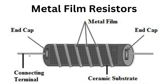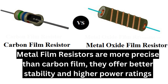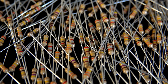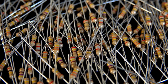Metal film resistors are more precise than carbon film. They offer better stability and higher power ratings. They are made by depositing a thin film of metal or metal oxide onto a ceramic or glass core. The thin film is the resistive element, and the core is non-conducting. The quality of the materials and processes used in their manufacture determines their performance.